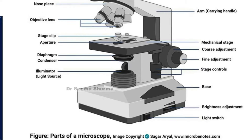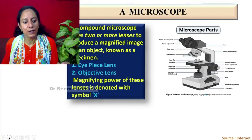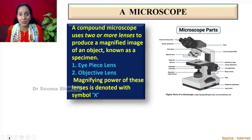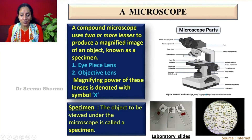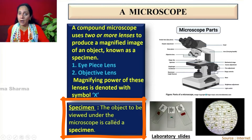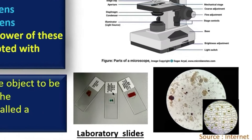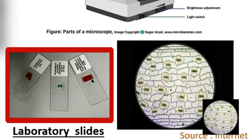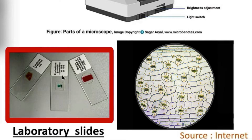So, these are the basic parts. Now let's learn a little more about what is a slide, what is a specimen, how they look. Specimen is the object which we want to view under the microscope. These are permanent laboratory slides in which that object is permanently fixed. This slide containing the specimen is kept on this stage, and by rotating the coarse and fine adjustment knobs, we can view the clear image of the object.